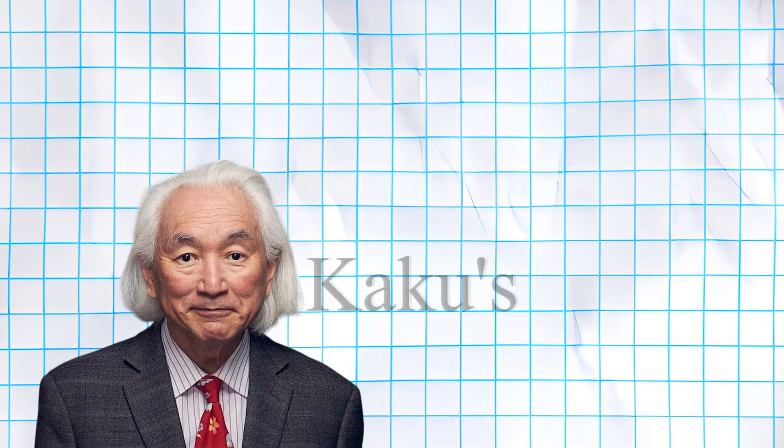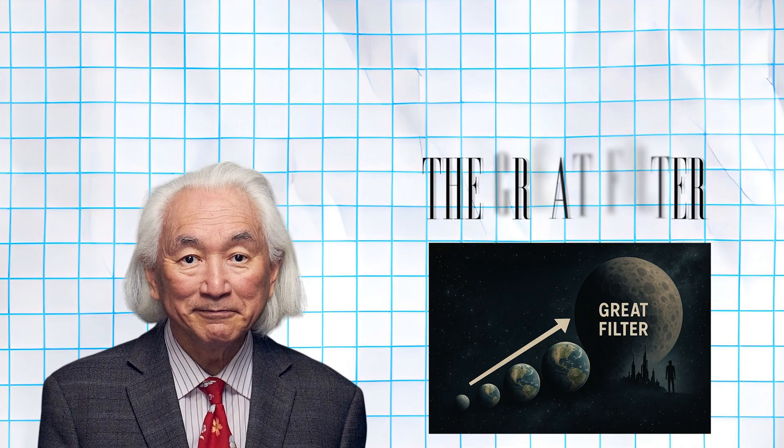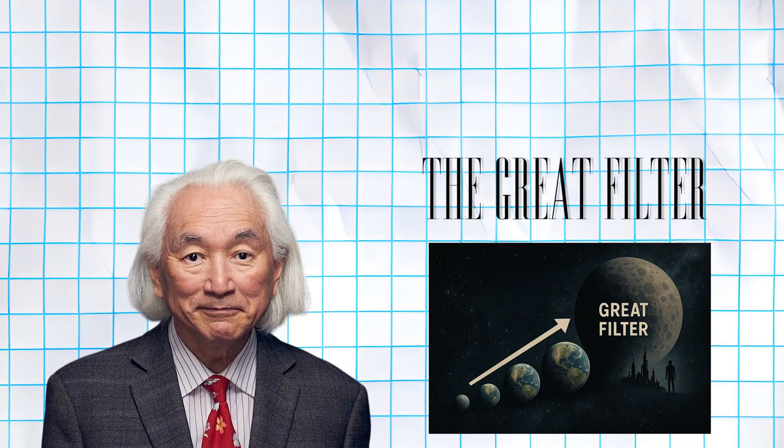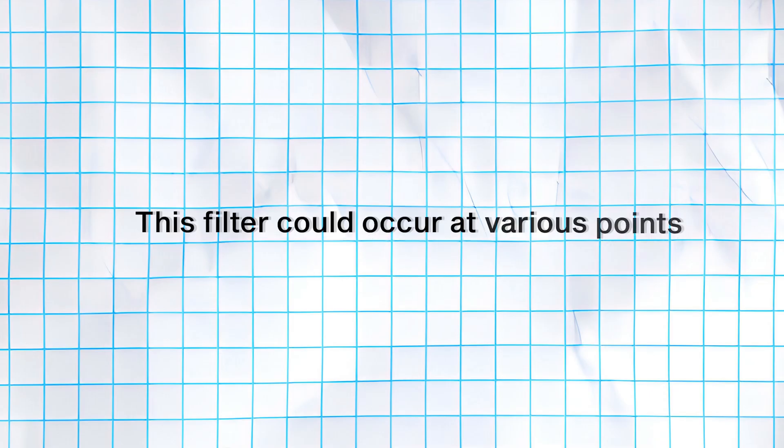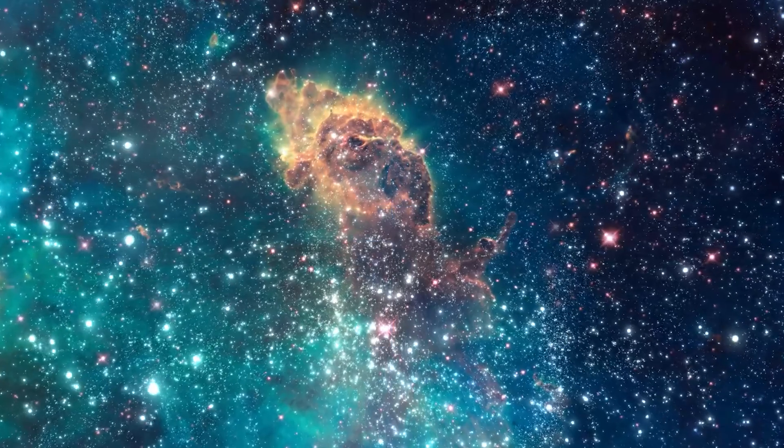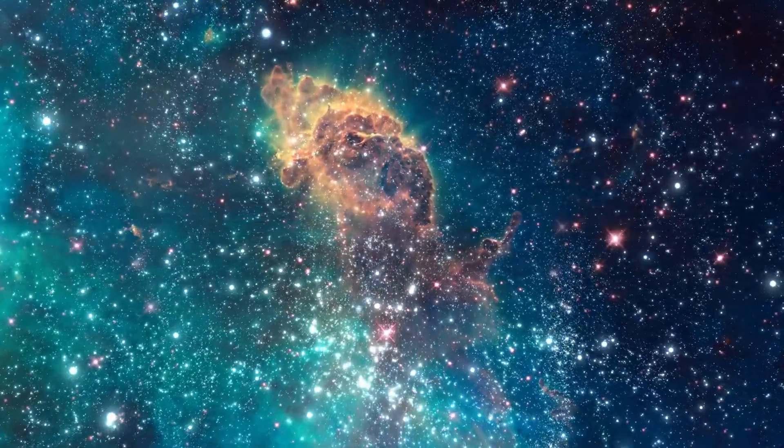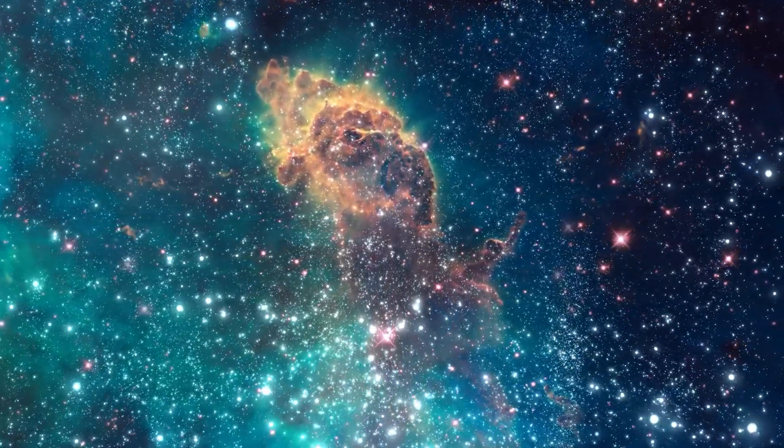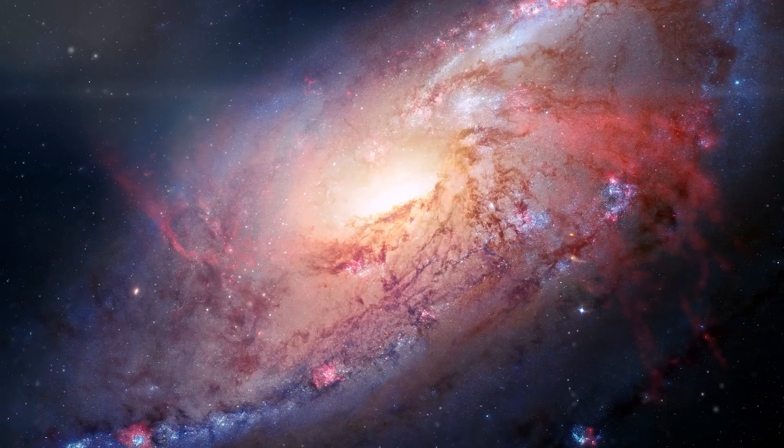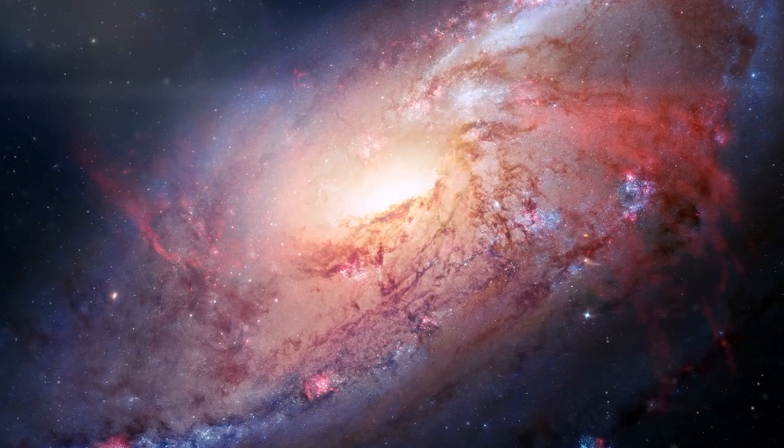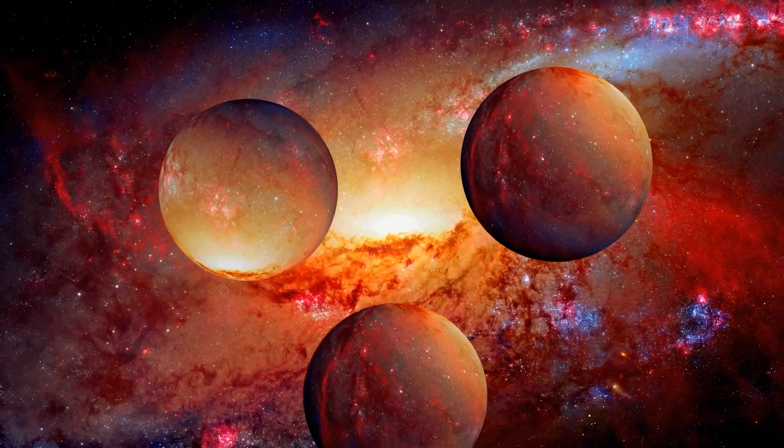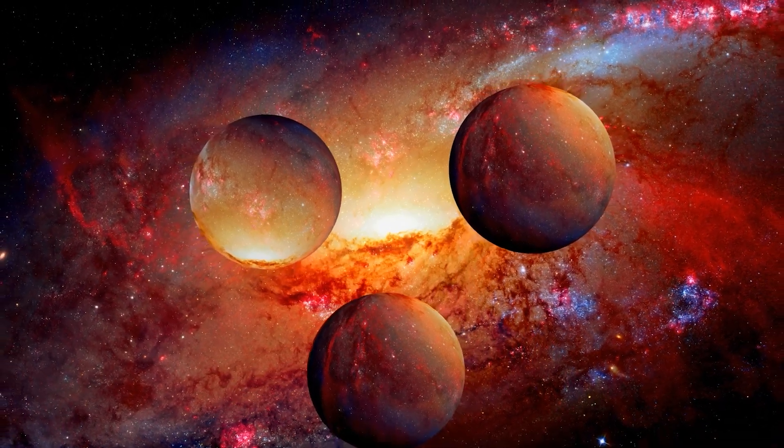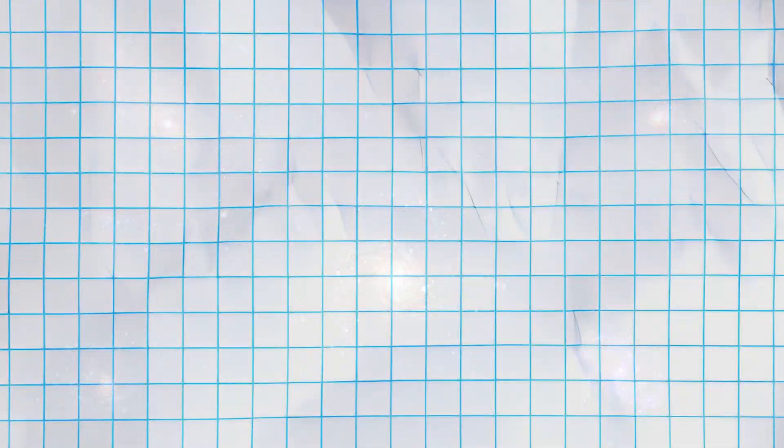Kaku's analysis incorporates the concept of the Great Filter, a theoretical barrier that prevents most life from reaching advanced technological stages. This filter could occur at various points in a civilization's development, from the emergence of life itself to the development of intelligence, or even at the stage where civilizations develop potentially self-destructive technologies. The physicist suggests that most civilizations may destroy themselves before achieving the technological sophistication necessary for interstellar communication or travel.